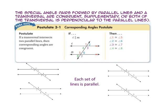Let's look at Postulate 3-1, the Corresponding Angles Postulate. If a transversal intersects two parallel lines, then corresponding angles are congruent. These are congruent angle pairs because the angles are corresponding, meaning they are in the same position, just in a different location along the transversal. In the first set of lines, angle 1 and angle 5 are corresponding angles, so they are congruent.